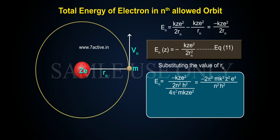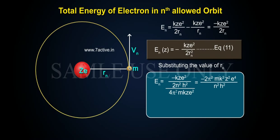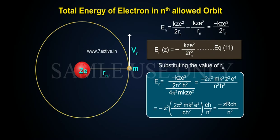Substituting the value of rn: En(Z) equals minus kZe² divided by 2 times (n²h²/4π²mkZe²), which simplifies to minus 2π²mk²Z²e⁴ divided by n²h², equals minus kZe²/n² equals minus Z² times 2π²mk²e⁴/ch².